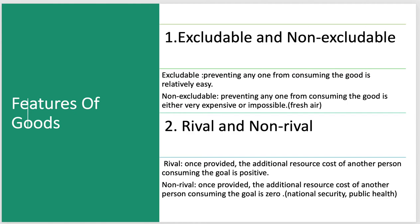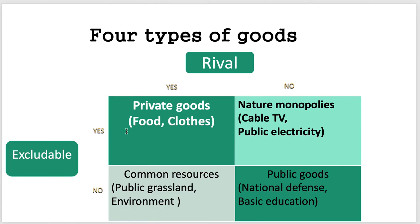Non-rival means once provided, the additional resource cost of another person consuming the good is zero — like national security and public health. If we spend money on that, it doesn't really matter about population; if another person is born, they're obviously a beneficiary of national security. If goods are rival and excludable, these are the goods we normally buy. If they're excludable but non-rival, we're talking about monopolies like cable TV, public electricity, or water. If they're rival but non-excludable, it's public grasslands or environment — we've already covered that in the tragedy of the commons and negative externalities.